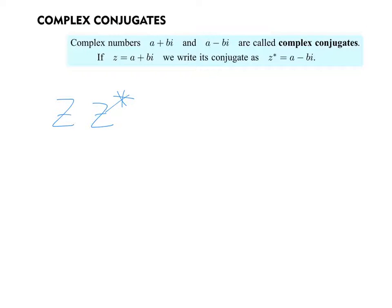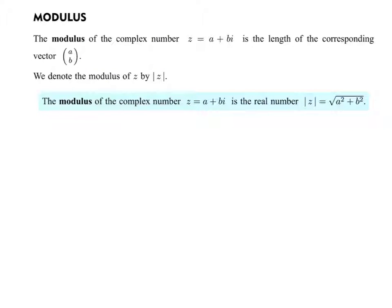And the last bit of notation that we want to talk about is they're going to use the modulus of a number, and they're going to say something like the modulus of z. We're going to talk in a minute about what that means, but let me remind you: modulus is how IB talks about absolute value.